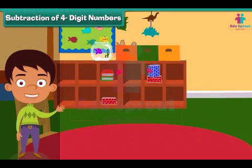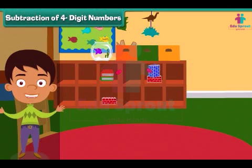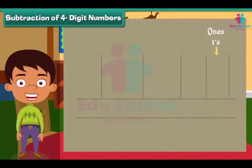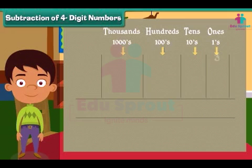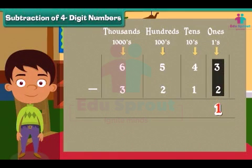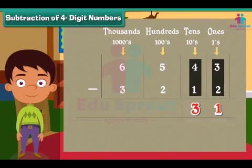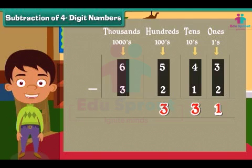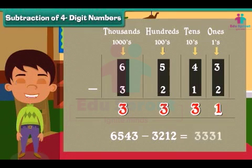Subtraction of four-digit numbers. Friends, Ben has now moved to solve subtraction. Let us subtract 3212 from 6543. Write the numbers in the respective columns. We start subtraction from the ones column: 3 minus 2 is equal to 1. Subtract tens: 4 minus 1 is equal to 3. Similarly, subtract hundreds and thousands: 5 minus 2 is 3, and 6 minus 3 is 3. So 6543 minus 3212 is 3331.